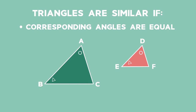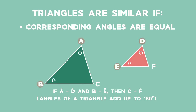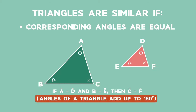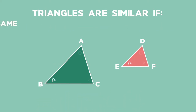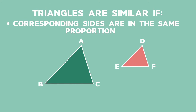Here is a tip for finding all equal corresponding angles. If two of the corresponding angles are equal, the third angle will also be equal because the sum of the angles in a triangle is 180 degrees. We can also prove that triangles are similar if we can prove that the corresponding sides are in the same proportion — in other words, the ratios of corresponding sides are equal, so AB to DE equals BC to EF equals AC to DF.